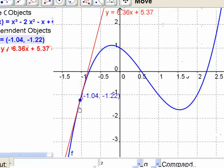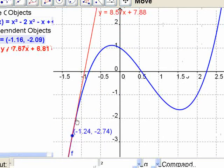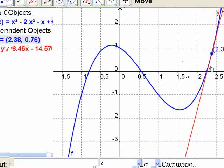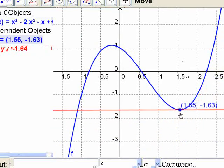It doesn't have any absolute maximums or minimums because this would just keep going down here. This would just keep going up here. The way we're looking for it is we're looking for where the derivative is zero.